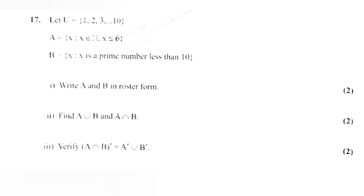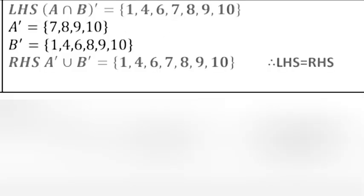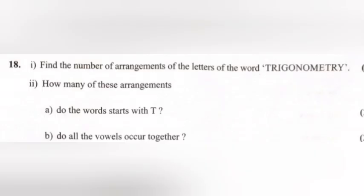Question 3: Verify that (A intersection B) complement equals A complement union B complement. Answer: LHS — (A intersection B) complement equal {1, 4, 6, 7, 8, 9, 10}. A complement equal {7, 8, 9, 10}; B complement equal {1, 4, 6, 8, 9, 10}. RHS — A complement union B complement equal {1, 4, 6, 7, 8, 9, 10}. Therefore LHS equal RHS.